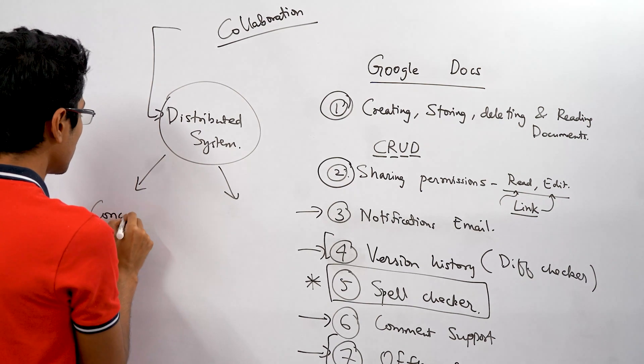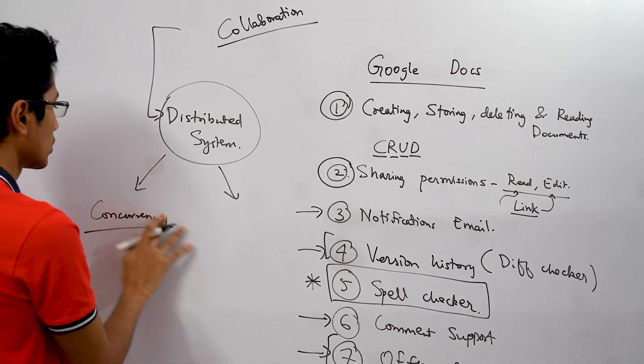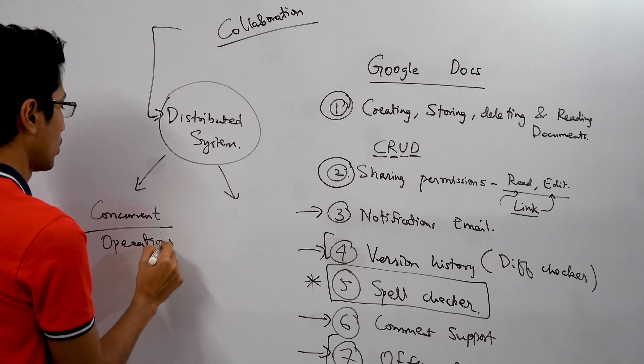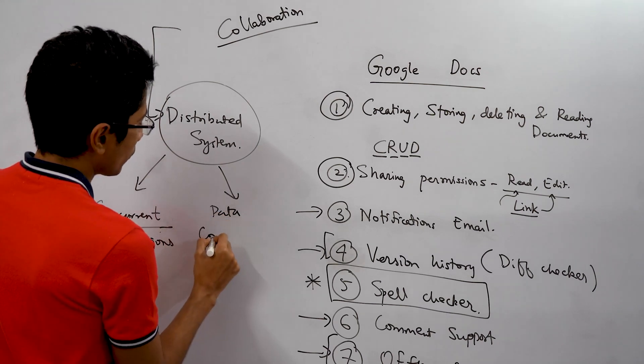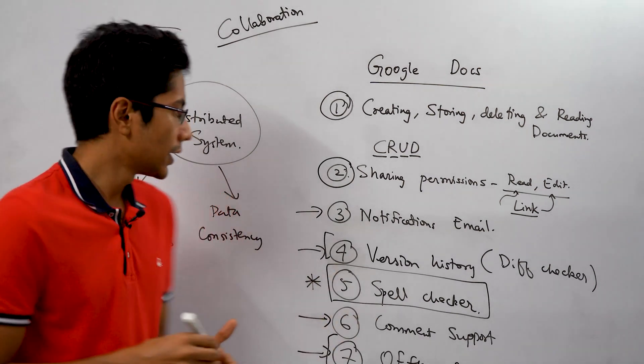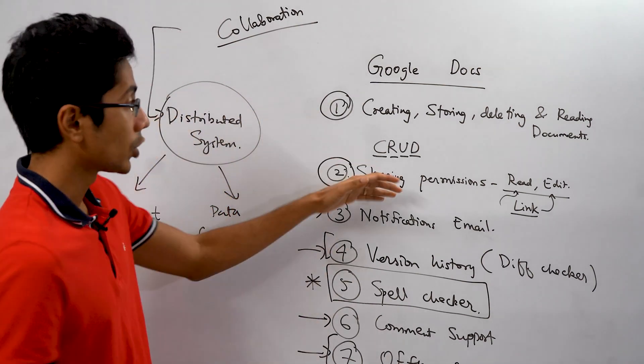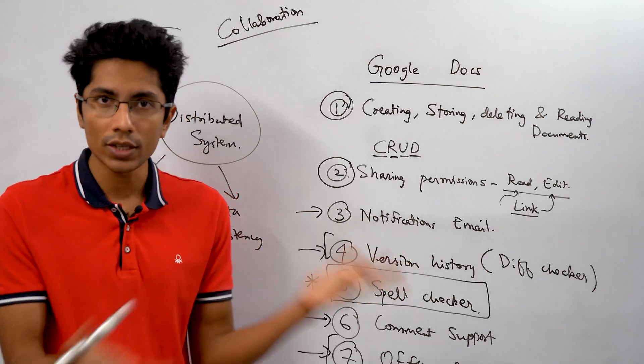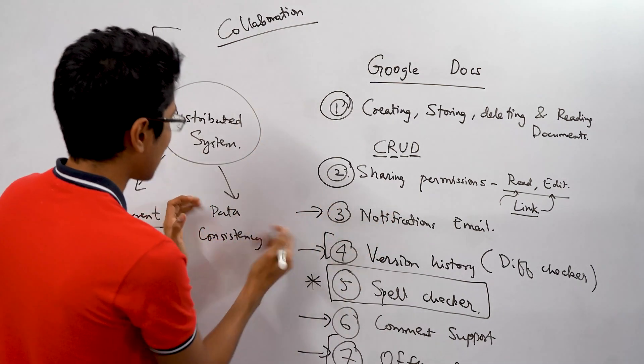And the other thing is that data consistency is a problem. Why so? Because well you have multiple copies of data if you are going to give multi-region support. Let's say some people are in India, some people are in the US and you have a document being shared amongst them. So you're going to be caching the document in India, in the US, and also you're going to be having multiple copies all around the world. So how do you make them all have some sort of data consistency.